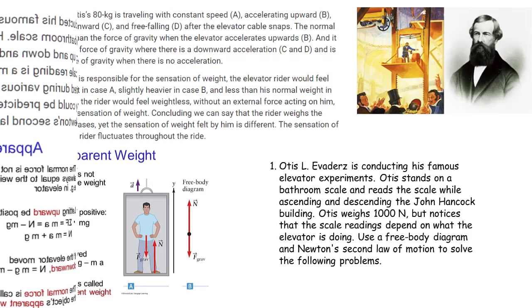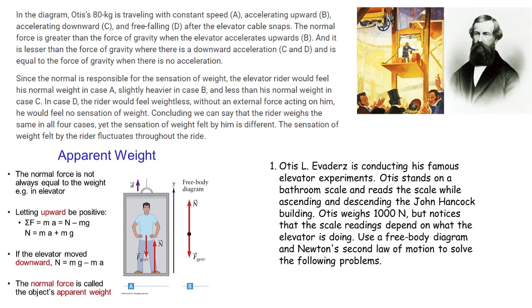In the diagram, Otis's 80 kilogram is traveling with constant speed, A; accelerating upward, B; accelerating downward, C; and free falling, D, after the elevator cable snaps. The normal force is greater than the force of gravity when the elevator accelerates upwards, B. And it is lesser than the force of gravity where there is a downward acceleration, C and D, and is equal to the force of gravity when there is no acceleration.